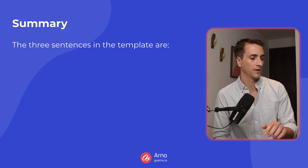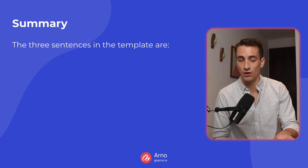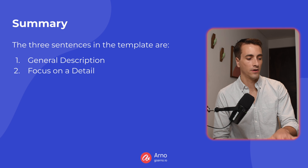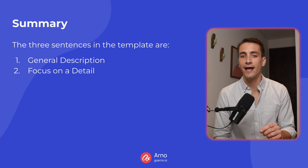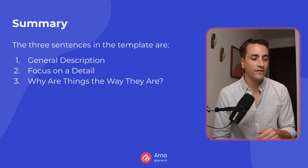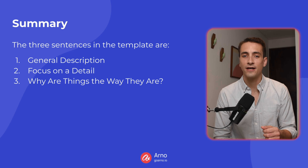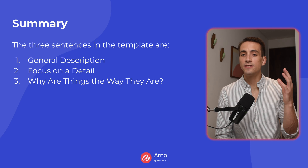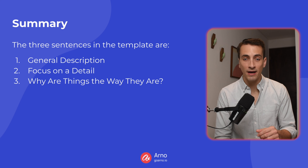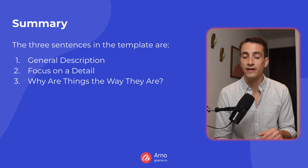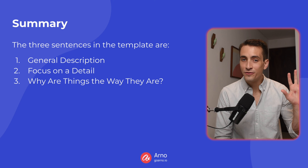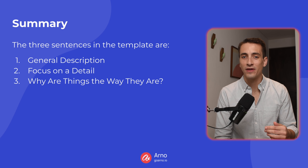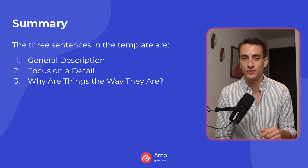So let's recap this three-sentence template that you can use for Write About the Photo questions. The three sentences in this template are: one, the general description; two, the focus on a detail; and finally, you should ask yourself why things are the way they are. This is a very easy template to remember, and you have specific vocabulary for each of the sentences, especially if you practice with this strategy and develop the habit of using the vocabulary and noticing good details to describe.